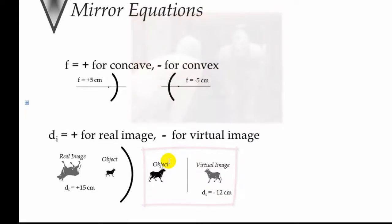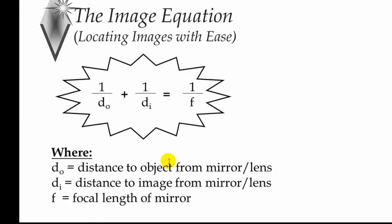So pretty much, in a nutshell, the mirror equation and the magnification equation can be used to locate any image with ease. The math isn't hard. It's understanding how the images are formed. That's the tricky part. And that's what we're going to look at.